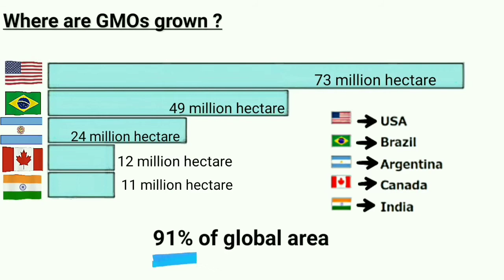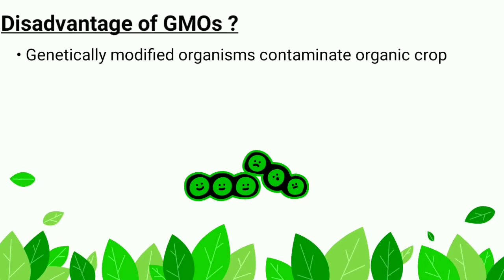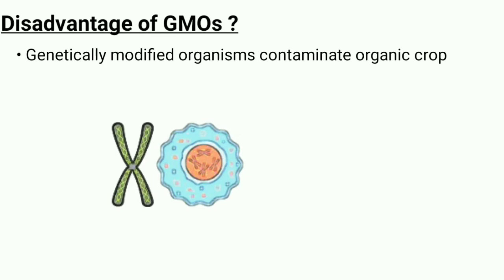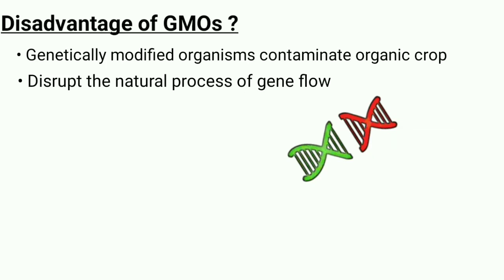Everything has some disadvantages. Genetically modified organisms can contaminate organic crops by cross-pollination and by increasing superweeds. Their production imposes high risk — the disruption of ecosystems and biodiversity — because the traits produced from engineered genes can result in the favouring of one organism, and can eventually disrupt the natural process of gene flow. Since GMOs are biologically altered, biotech food may also pose a human health risk.